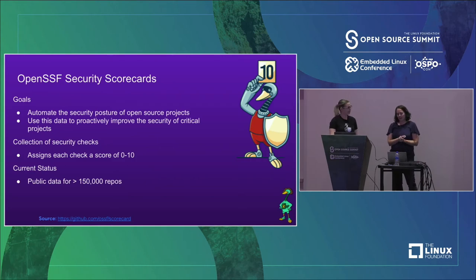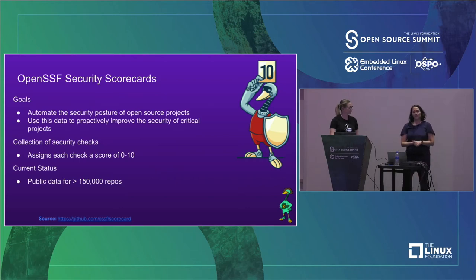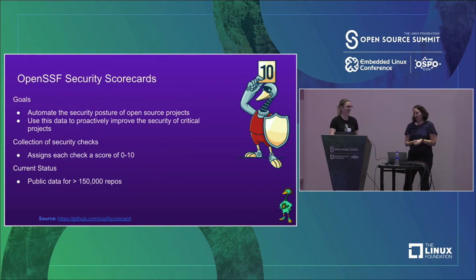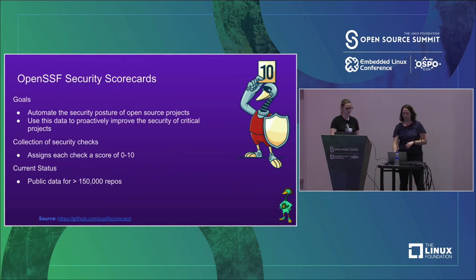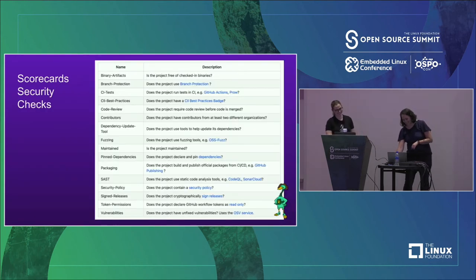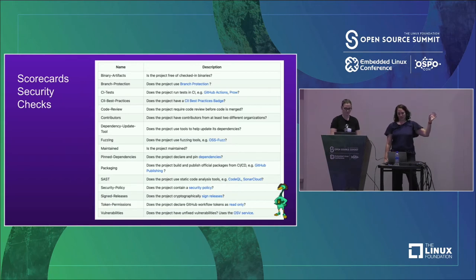We now have public data for over 150,000 GitHub repos today, stored in BigQuery as a public dataset. The project originally started out as pass-fail on security checks, but now we've moved into a model where it's scored 0 through 10, and we give a confidence level of how confident we are that it meets specific criteria.